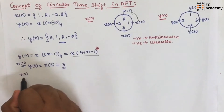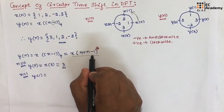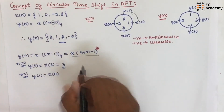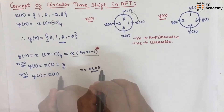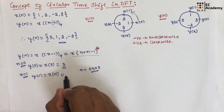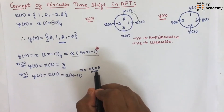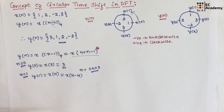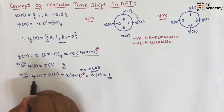If we put n equal to 1, y of 1 will be equal to x of 5 minus 1, which is x of 4. Now x of 4 is out of range of the given sequence — n can only have values from 0 to 3. So we subtract the length of the sequence: x of 4 minus 4 gives x of 0, and x of 0 is 1. Therefore y of 1 is 1.